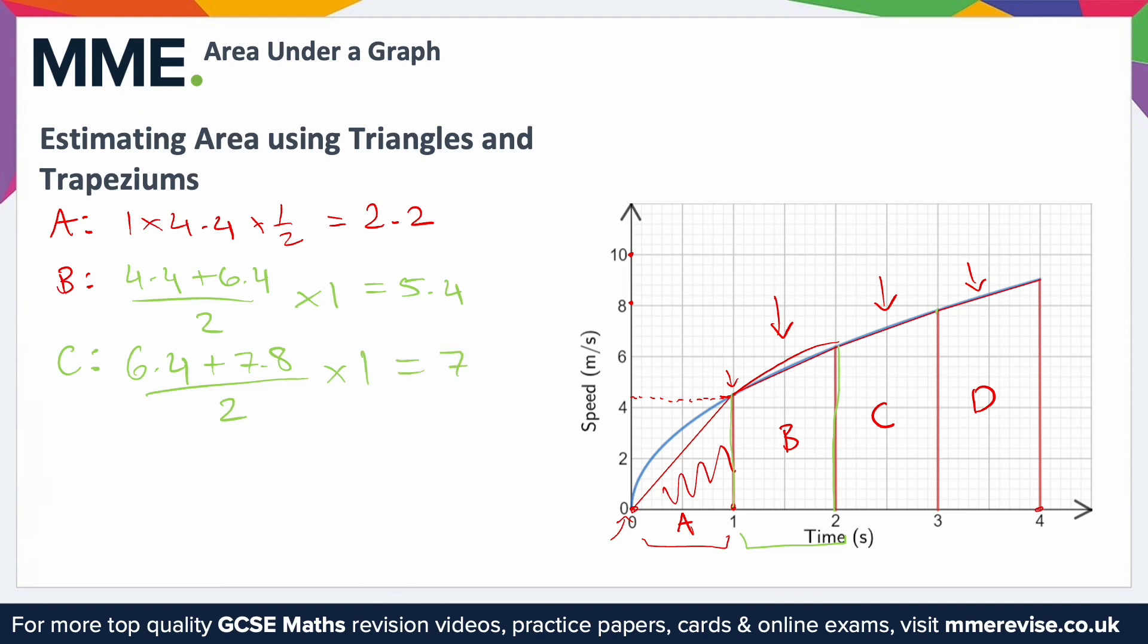Finally, D. We need the height here first of all, but again that's just the same as the end of C, so that's 7.8, plus the height here, which I'm going to say is 9 because it's halfway in between these ones here. Again, you might read it ever so slightly differently, but as long as they're pretty similar to each other, you'll be fine. So add 9 to that, divide it by 2, and then times by the width of the trapezium, which again is 1. So that gives us 8.4. So we have four separate sections of the graph with four different areas.